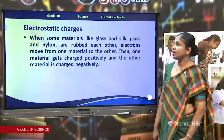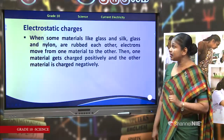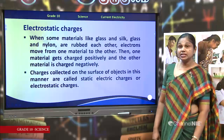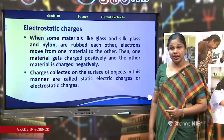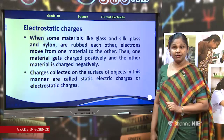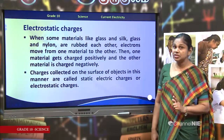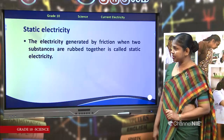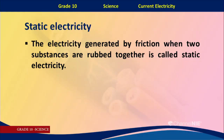Now look here. When some materials like glass and silk, or glass and nylon, are rubbed together, electrons move from one material to the other. Then one material gets charged positively and the other is charged negatively. Charges collected on the surface of objects in this manner are called Static Electric Charges or Electrostatic Charges. Static Electricity is the electricity generated by friction when two substances are rubbed together.